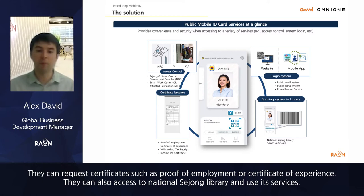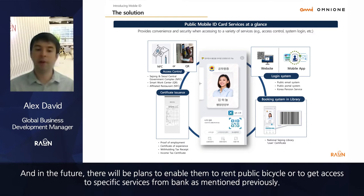Officials can request certificates such as proof of employment or certificate of experience. They can also access the National Sejong Library and use its services. In the future, plans include enabling them to rent public bicycles or access specific services from banks.